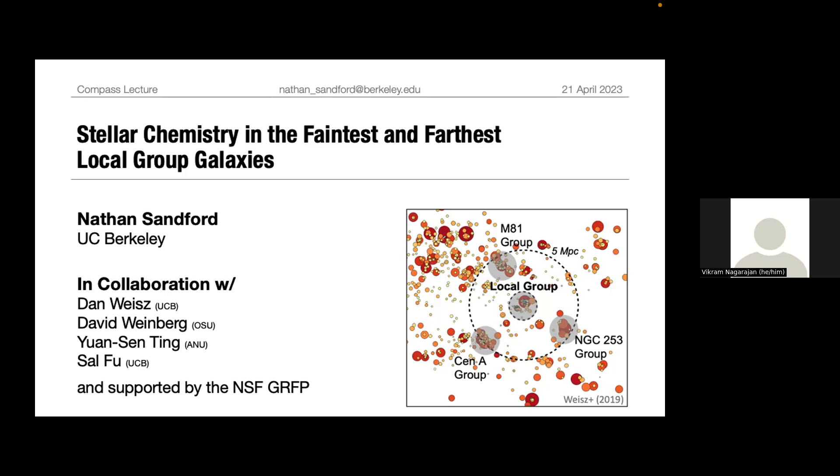After he completes his PhD this coming summer, Nathan will be trading his lifelong California residency to become an astronomy postdoc at the University of Toronto in Ontario, Canada. Outside of work, Nathan enjoys cooking and spending quality time with his partner Grace and cat Flamingo. Without further ado, please welcome Nathan.